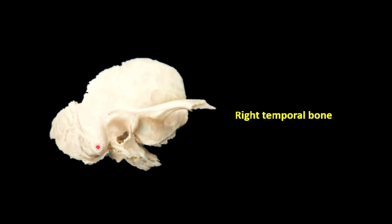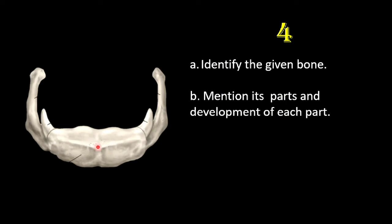The next question: identify the given bone, mention its parts and the development of each part. This is the hyoid bone. Its parts are the body, two lesser horns, and two greater horns. The upper part of the body and the lesser horns are developed from the second pharyngeal arch — remember: S for superior and S for smaller horns. The lower part of the body and the greater horns are developed from the third pharyngeal arch.